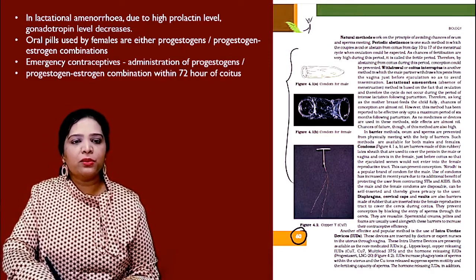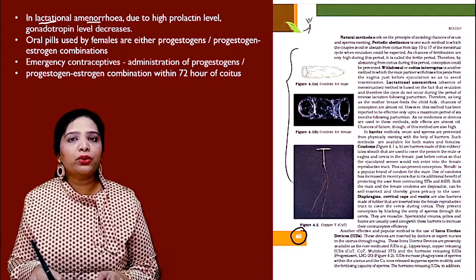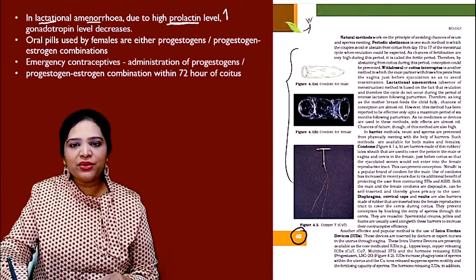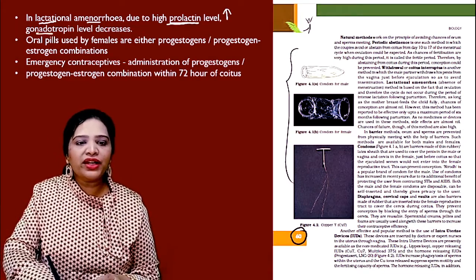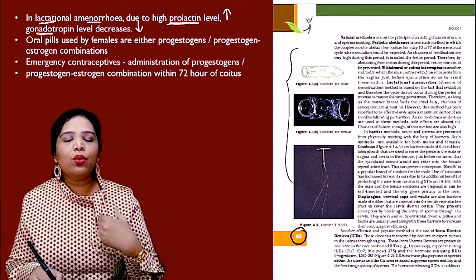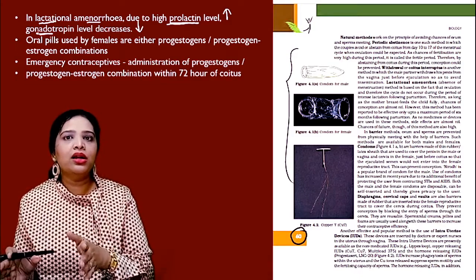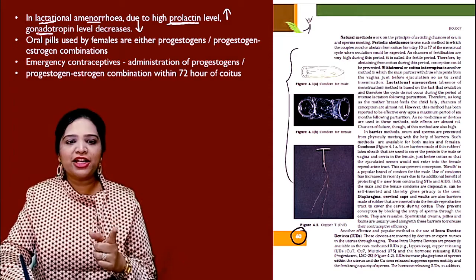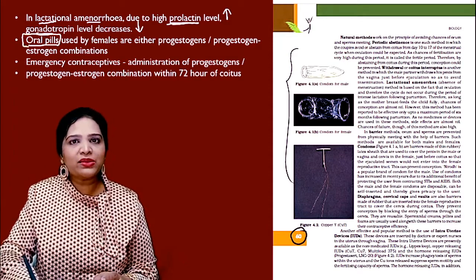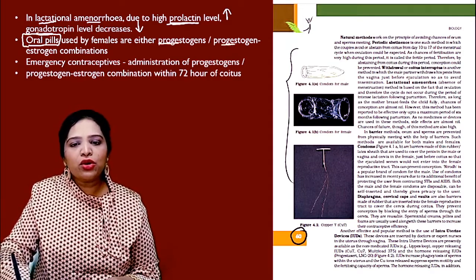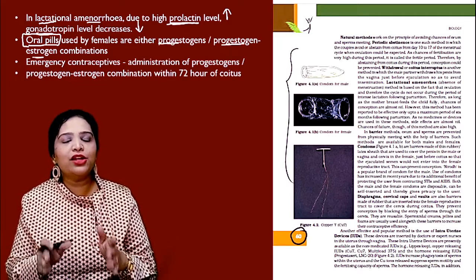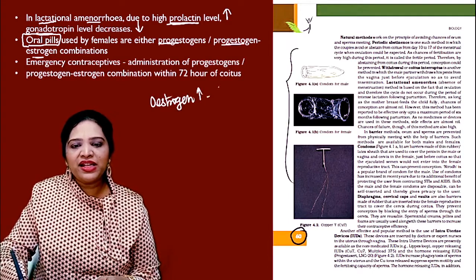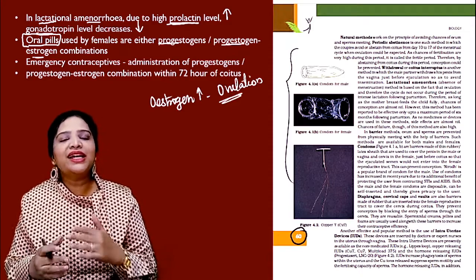In lactational amenorrhea, after delivery, if a mother feeds her baby, the prolactin hormone level will be increased because it is needed for milk secretion. During that time, gonadotrophin levels will be decreased, so she will not have ovulation. This is a natural method of contraception. With oral contraceptive pills, they contain progesterone or a progesterone-estrogen combination, which prevents or suppresses ovulation. When the estrogen level is high, it prevents ovulation, so egg release will not occur.